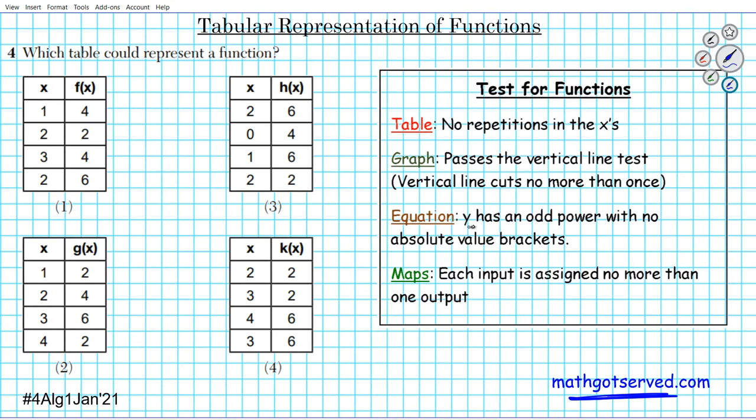For maps, each input is assigned to no more than one output. These are the criteria to determine if a table, graph, equation, or map of a relation is actually a function. Our focus for this particular question number four is the tabular representation, and the trick here is you need to have no repetitions in the X's.